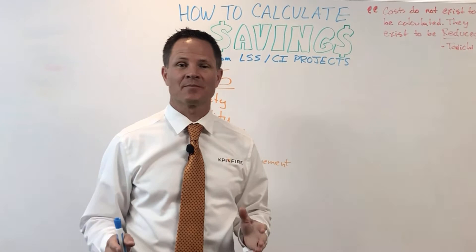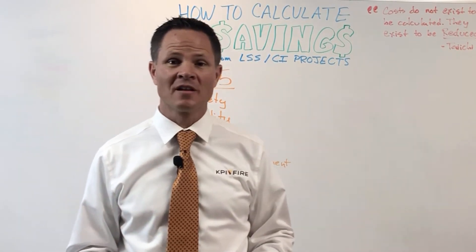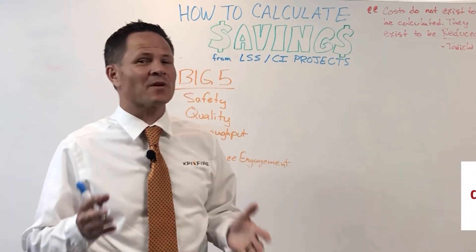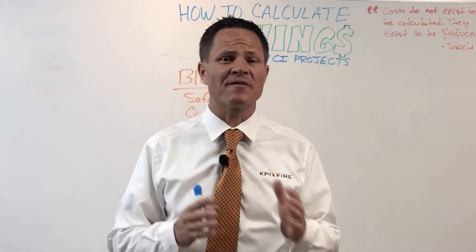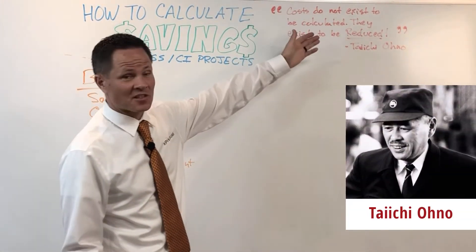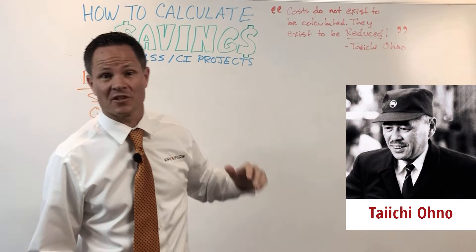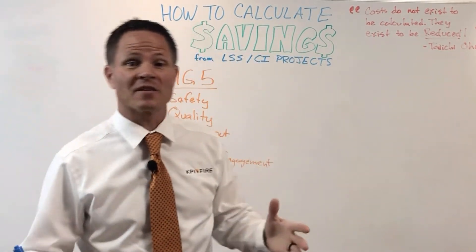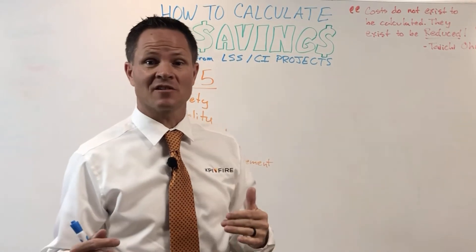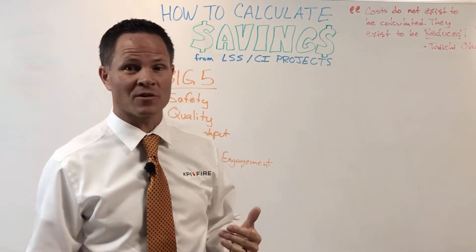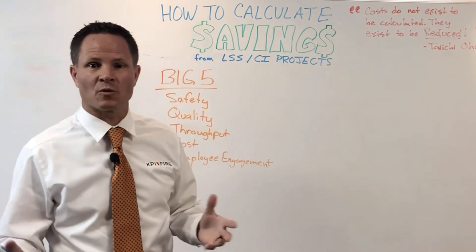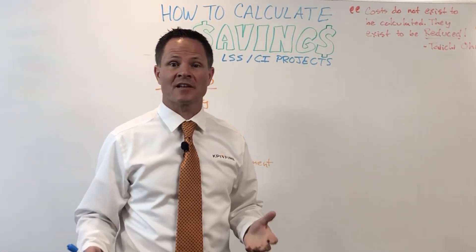This is a really important topic because you should be calculating your savings. I talk to lots of companies and the rate of people that calculate their savings is about 50-50. Taichiano said costs don't exist to be calculated, they exist to be reduced. So if one of the founding fathers of Lean thought that tracking cost reductions is important, we should be doing it — whatever type of OPEX or continuous improvement work we're doing.